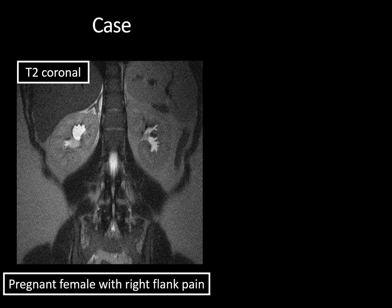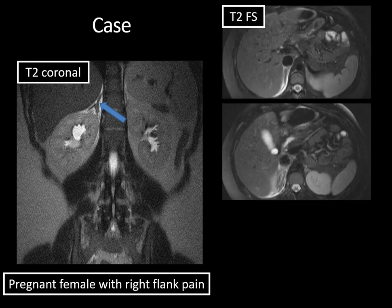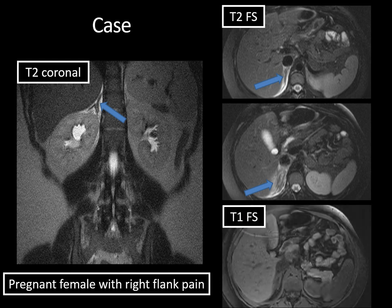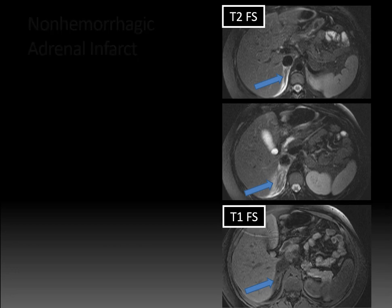A pregnant female presented to the emergency department with right flank pain. MRI of the abdomen was performed. The T2 coronal image shows the right adrenal gland is enlarged, edematous, and has periadrenal T2 hyperintense edema. The renal collecting systems are somewhat dilated, more pronounced on the right, but due to physiologic compression of the gravid uterus against the distal ureters. T2 fat-suppressed axial images make the fluid signal more conspicuous, confirming right periadrenal edema and adrenal enlargement with T2 hyperintensity iso-intense to CSF in the spinal canal. Adrenal infarct is the main differential. Reviewing T1 fat-suppressed images, the adrenal gland is not hyperintense, so there is no evidence of hemorrhagic adrenal infarct — this was a case of non-hemorrhagic adrenal infarction.